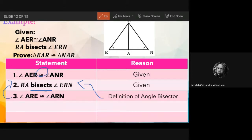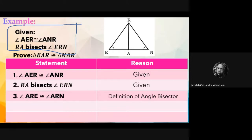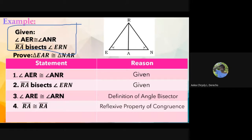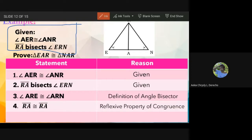There is no more given, so look at the figure. Ricardo answers: side RA is congruent to side RA. The reason is reflexive property of congruence. So we have angle A, angle A, and side S — that gives us AAS.